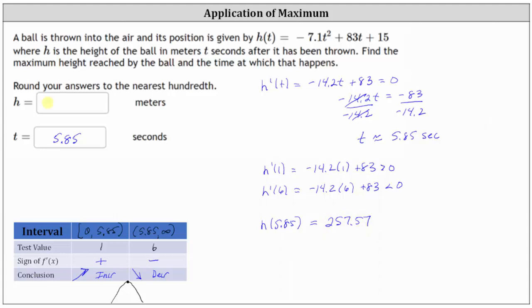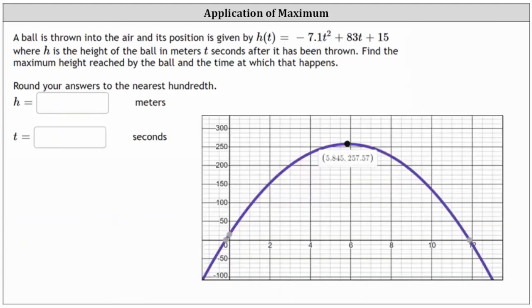Let's go ahead and record this above as well. Before we go, let's verify this graphically. Notice how we do have a parabola that opens down and we just found the vertex using calculus techniques, where the t coordinate is the time where the maximum height occurs, which is approximately 5.85 seconds. And the function value is the maximum height of approximately 257.57.